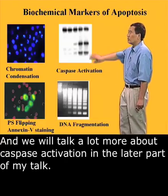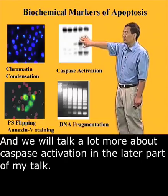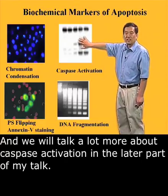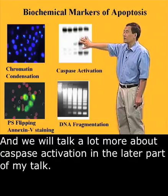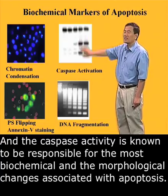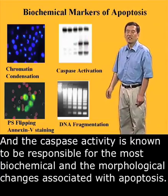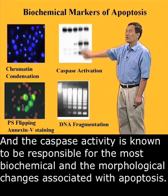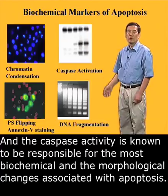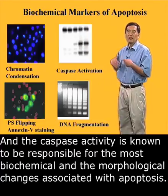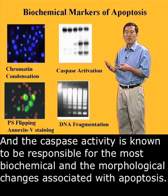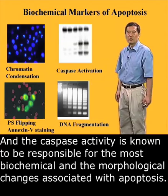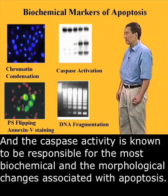These proteases are made in living cells as zymogens — they are not active — but when a cell is undergoing apoptosis they will become activated. The activation is represented by the cleavage of the precursor or zymogen form into the active form, which is usually about 20 and 10 kDa. Caspase activity is known to be responsible for most of the biochemical and morphological changes associated with apoptosis.